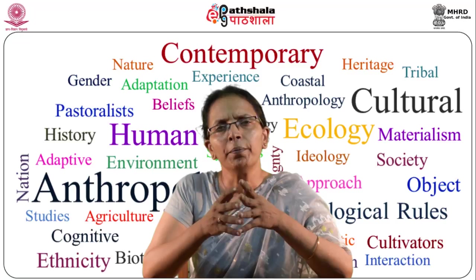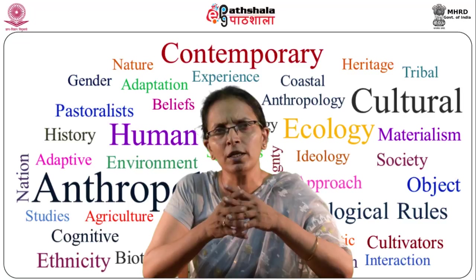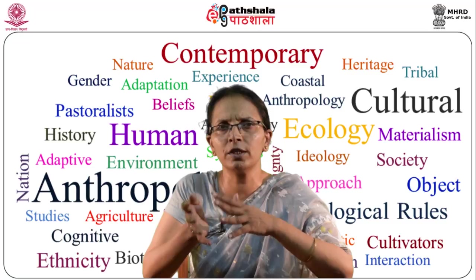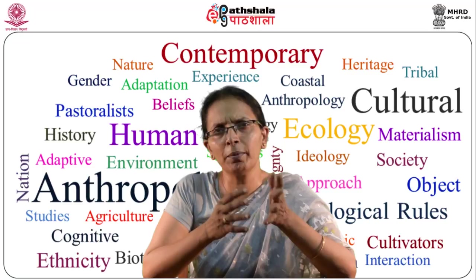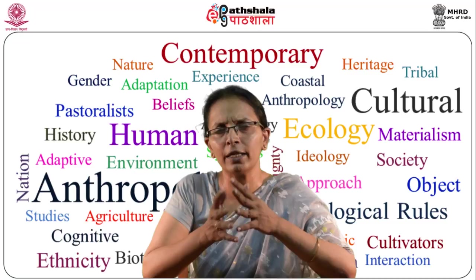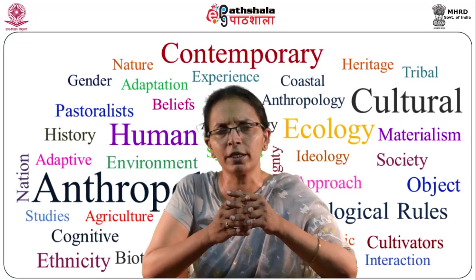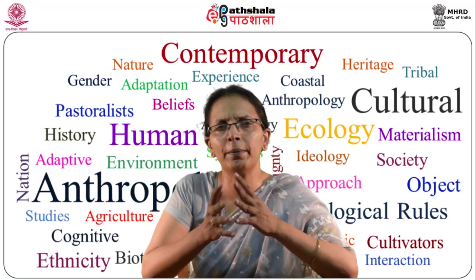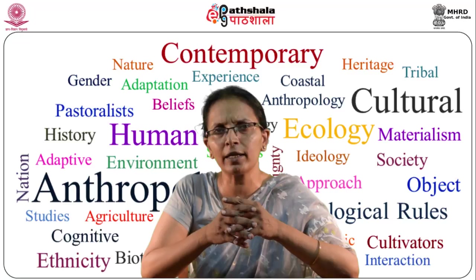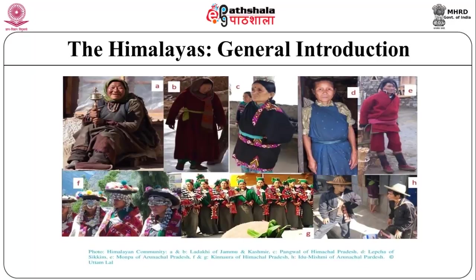Mixed agro-pastoralism is confined to mid-altitudinal areas ranging between 1500 to 3000 meters. This has been a sedentary economic zone where people combined sedentary cultivation along with animal herding. Larger parts of Himachal Pradesh, including lower Kinnaur, Kashmir valley, Uttarakhand in the western Himalayas, Sikkim, and considerable portions of Arunachal Pradesh fall under this category, where people primarily reared goats and sheep among smaller domestic animals, and cows and buffaloes among bigger cattle.